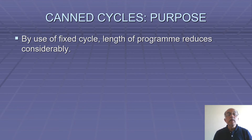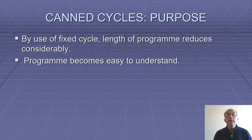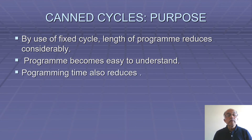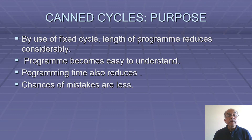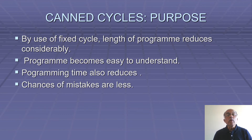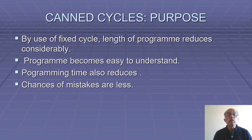By use of a fixed cycle or canned cycle, the length of the program reduces considerably. The program becomes easy to understand, programming time also reduces, and chances of mistakes are less. If somebody else sees the program, they can also understand it, and editing of the program is also easy. So in all CNC turning programs, different canned cycles are used.